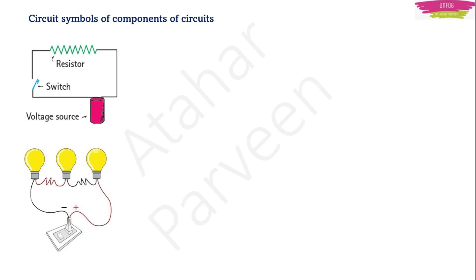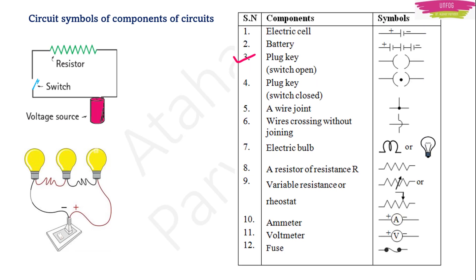What is the symbol of the switch? In the first circuit, the blue-colour open line shows an open switch. If you attach that blue line to the circuit, the switch is ON and current can flow. There is another symbol: for an open switch you write two open brackets, and for a closed switch you place a dot inside those brackets. Switch open means the circuit is incomplete; switch closed means the circuit is complete. Current flows only in a complete circuit.